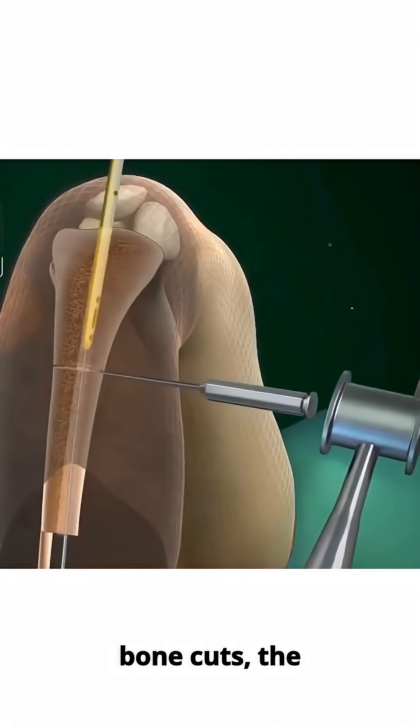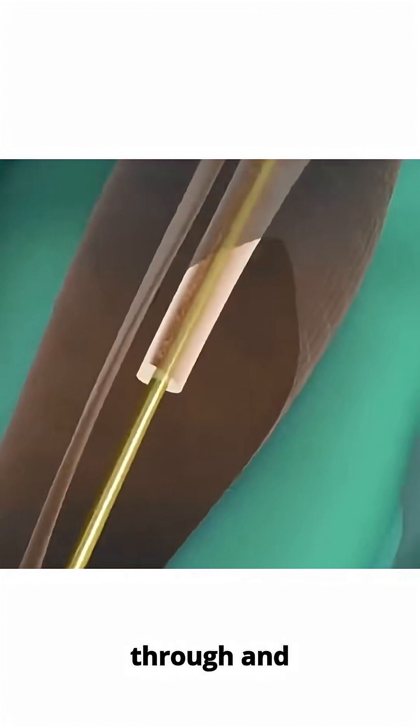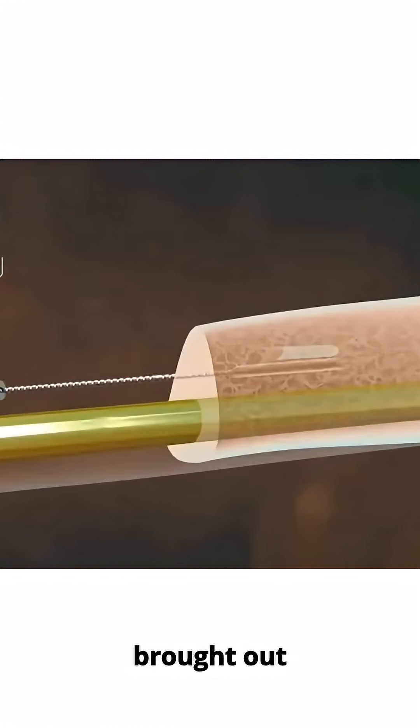After completing the bone cuts, the nail is locked into place with bolts. Small holes are drilled in the bone for cables to pass through and guide the movement. The cables are carefully threaded and brought out through the skin.